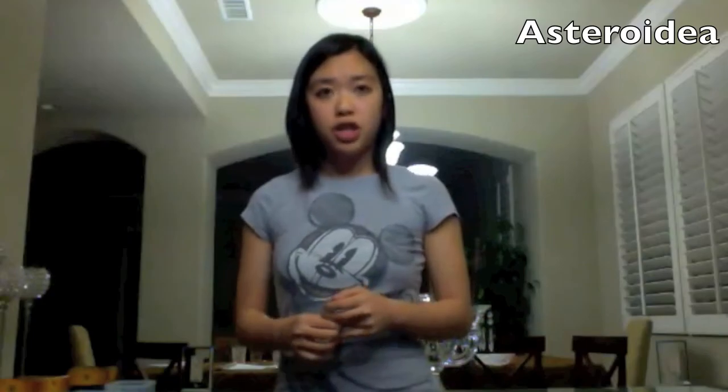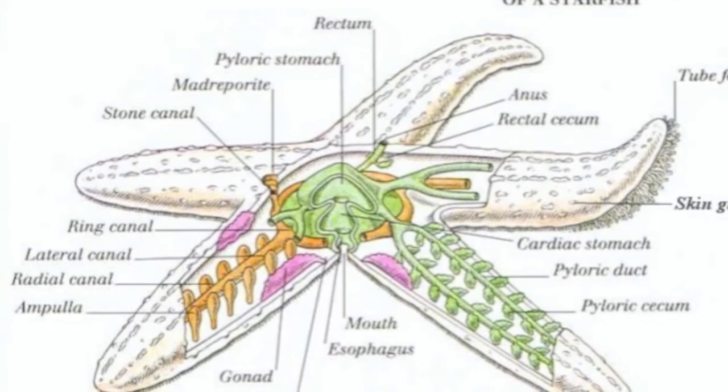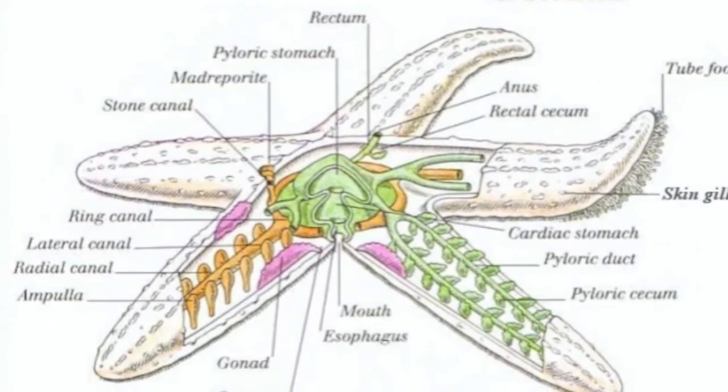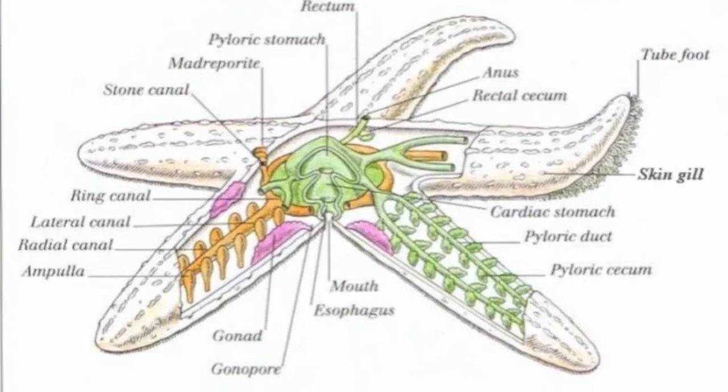Now we're moving on to deuterostomes. The major phylum of deuterostomes we'll cover is Echinodermata — the other phylum, Chordata, includes vertebrates which we won't cover here. Echinoderms have a water vascular system and radial symmetry. Class Asteroidea includes starfish and sea stars. They adapt to dangerous surroundings through highly sensitive senses of smell, touch, and taste, and move through a hydraulic muscle system that creates powerful adhesion to rocks.